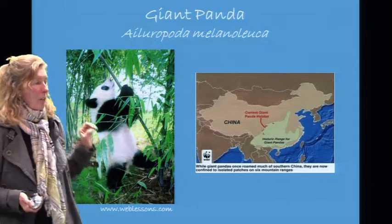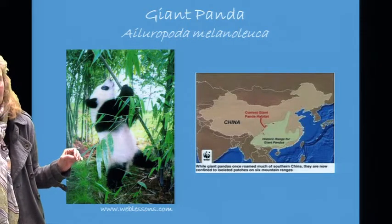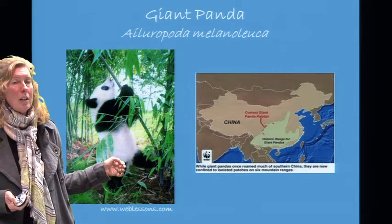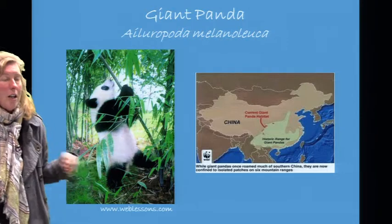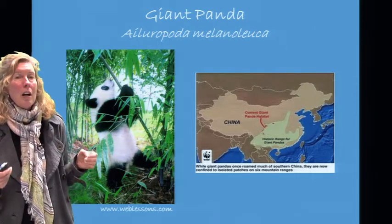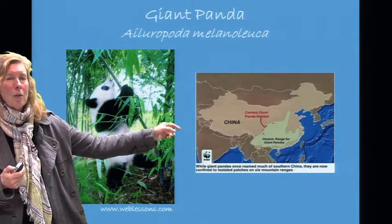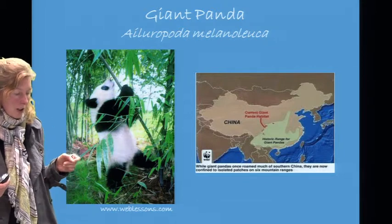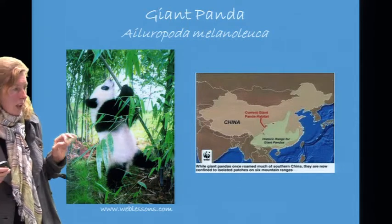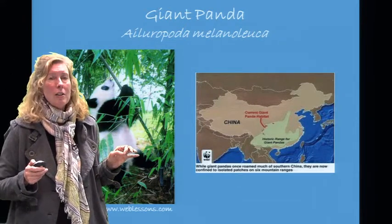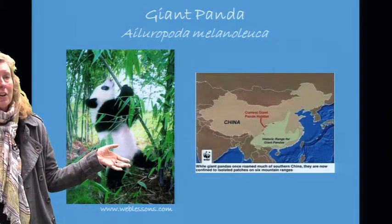The giant panda is a great example of a specialist species — specifically a dietary specialist. It occurs in China, and while its ancestral range covered a large greenish zone in southern China, the range has now been reduced to just a few areas along the northern edge in montane regions. If there were forest fires, or a blight or fungus that eliminated the bamboo, we would lose our giant panda.